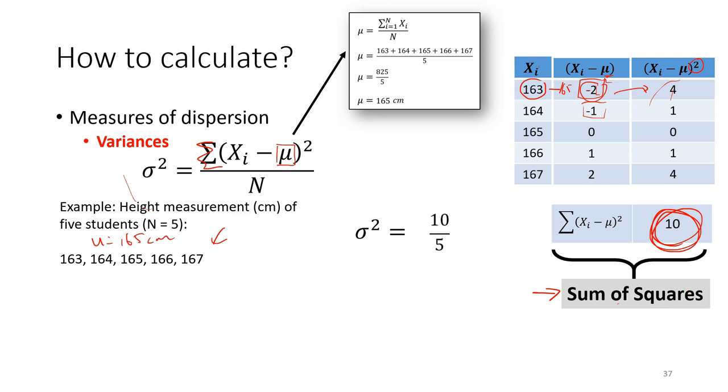After that, we can put the data. The sum of squares is 10. This sum of squares is 10 divided by N, and the number of observations is 5, so 10 divided by 5 is 2. Remember, you always need to put a unit. Because just now each of this is cm, if you square the cm it will become square cm (cm²).